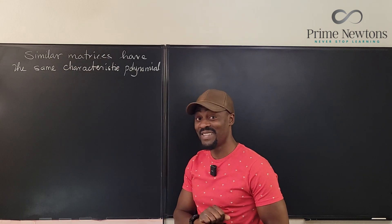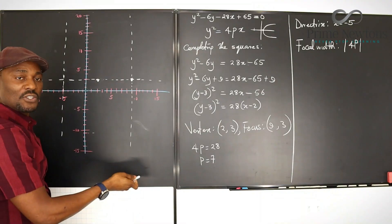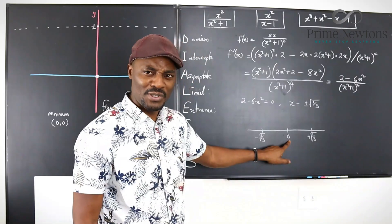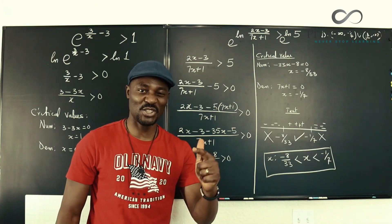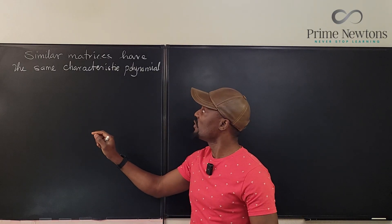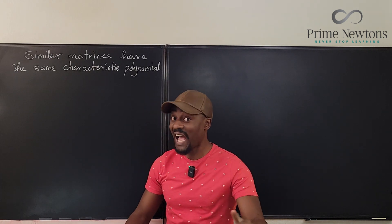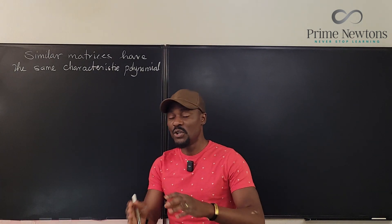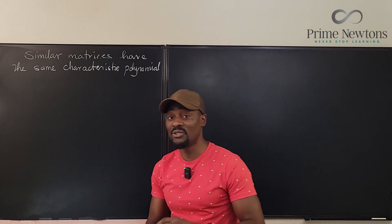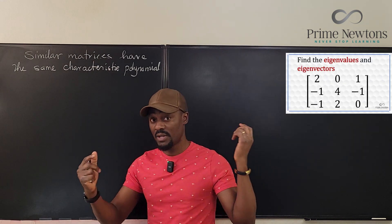Another way this question could have been framed would be to say that similar matrices have the same eigenvalues — not eigenvectors. If you're still confused between eigenvalues and eigenvectors, you can watch another video I made a while ago.